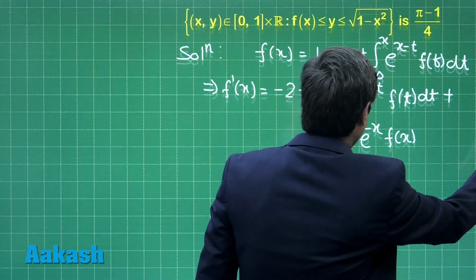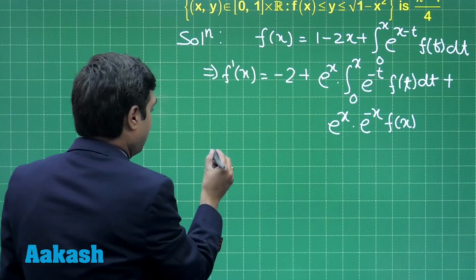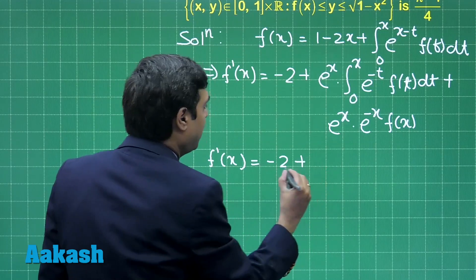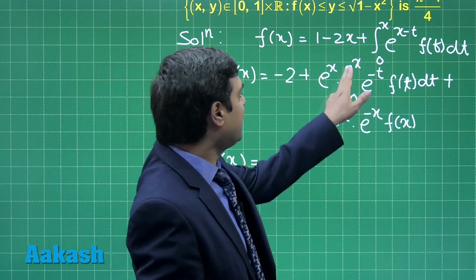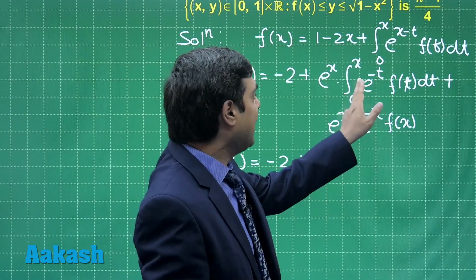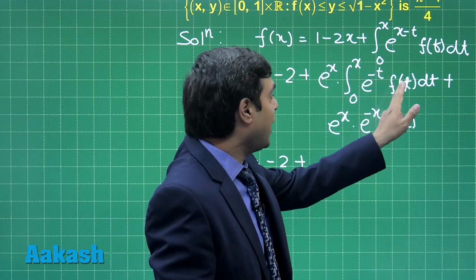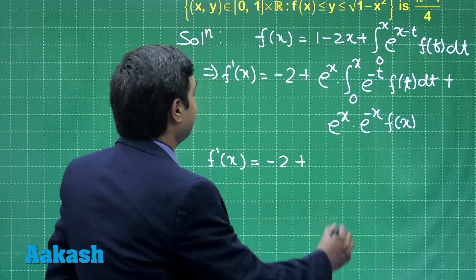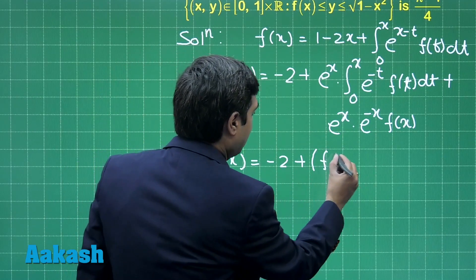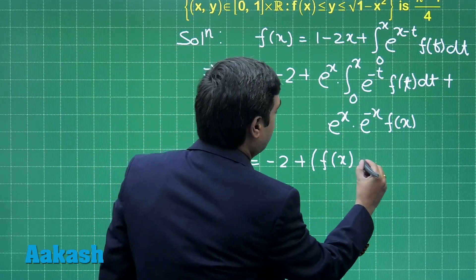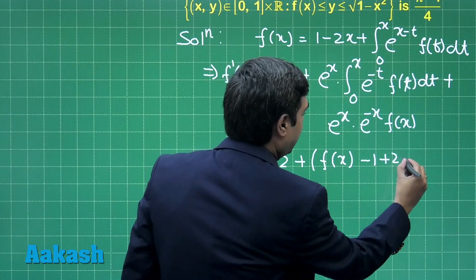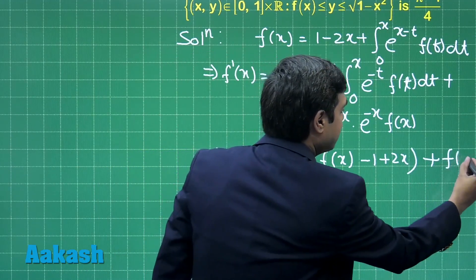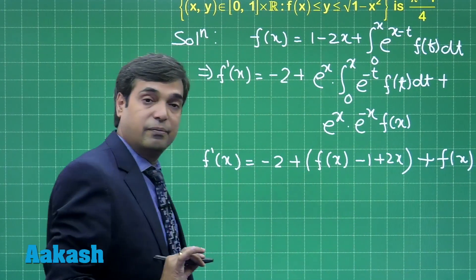Moving ahead, we get f'(x) is equal to minus 2 plus this term, integral 0 to x e^(x-t) f(t) dt, which can be taken from the given equation, which is f(x) minus 1 plus 2x, next plus f(x) as the third term.